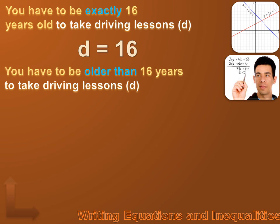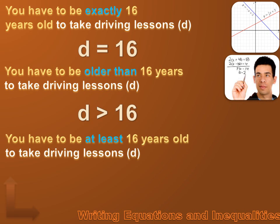What if you have to be older than 16 years to take driving lessons? D has to be greater than 16, so we write D is greater than 16 — the open end of the symbol is towards D. What if you have to be at least 16 years old? When you're 16 or 16 and a half, you can take driving lessons. That means D is greater than or equal to 16.